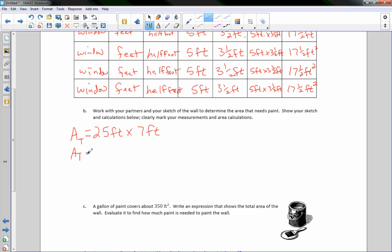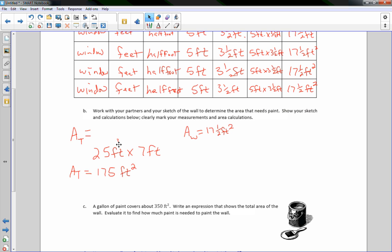So the area total is going to equal this entire area, which is 25 feet by seven feet. So the area total is going to be 25 feet times seven feet. So the total area is going to be seven times five is 35, carry the three. And seven times two is 14, plus three is 17. So we have 175 feet squared that we want to paint. So 175 square feet. And then we are going to subtract the window areas. So area of the window was 17 and one half feet squared. We've done it up here.